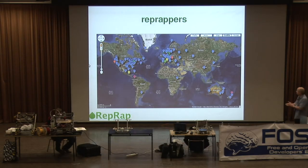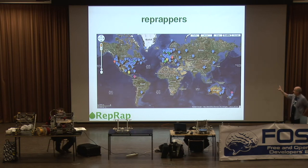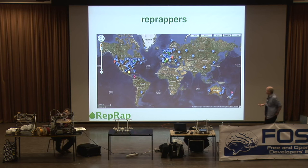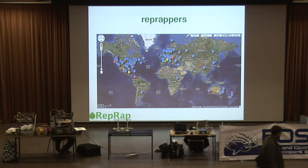Here's a little map. When people start putting machines together, we invite them to put a pin on a Google map. This is by no means all of the people involved in building these machines — just the ones who could be bothered to put a pin on the map — but it gives you an idea of the distribution. Unsurprisingly, Europe and North America have pretty dense populations, but they're starting to appear in South America, Africa, Eastern Asia, and there's another concentration in Australia and New Zealand. That's a snapshot from about two months ago.